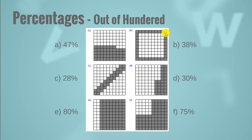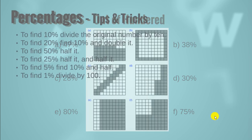Here we have 38 shaded boxes out of these whole 100 boxes. So we will say we have 38% of the boxes shaded. We do not need to say 38 out of 100. Same goes for 28% and 30%, 80% and 75%. Let's move forward.